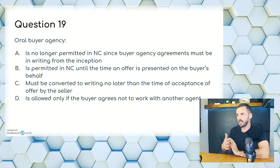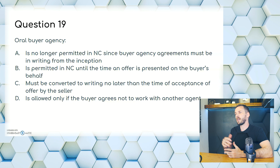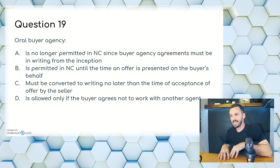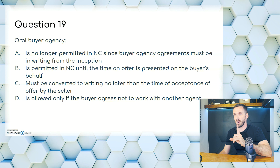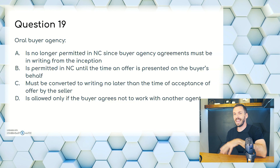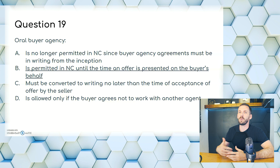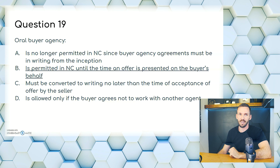Question 19. Oral buyer agency: A, is no longer permitted in North Carolina since buyer agency agreements must be in writing from inception; B, is permitted in North Carolina until the time an offer is presented on the buyer's behalf; C, must be converted to writing no later than the time of acceptance of the offer by the seller; or D, is allowed only if the buyer agrees not to work with another agent. Oral buyer agency is permitted, so it's not A. The difference between B and C is before the offer versus before acceptance — the answer is B.